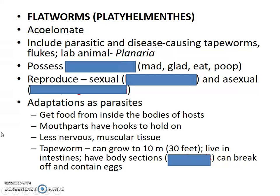These are parasitic. It does include tapeworms, which sheep, humans, pigs, and cattle can get. Also the lab animal planaria, which is really cool — there's an example of that in your notes on the right-hand side. They do possess a very primitive brain. When I say primitive brain, I mean there are really only four functions it takes care of: mad, glad, eat, and gotta poop. It is a little bit more advanced than the simple reflex arc that the cnidarians had.